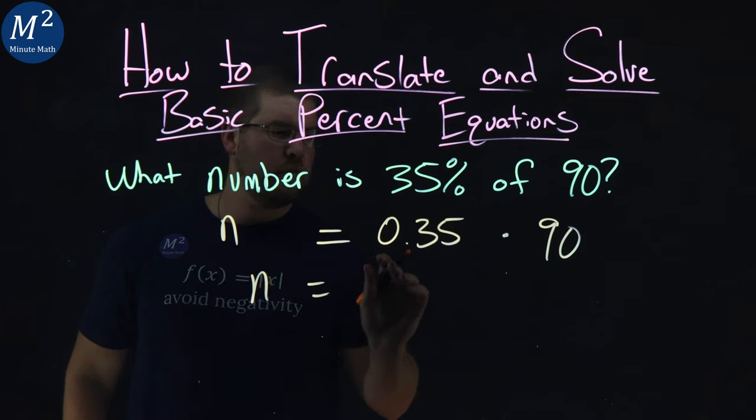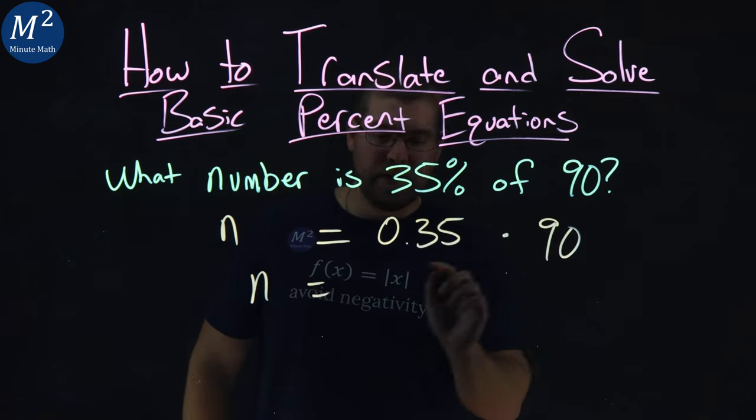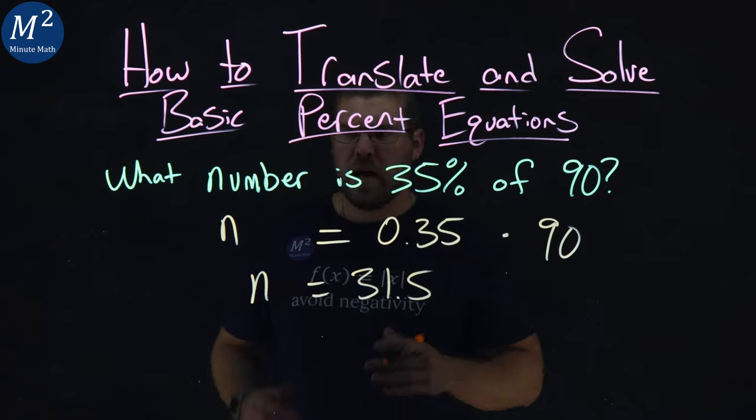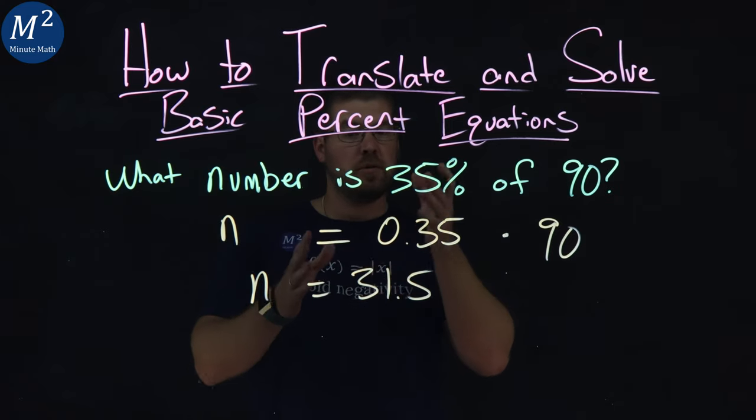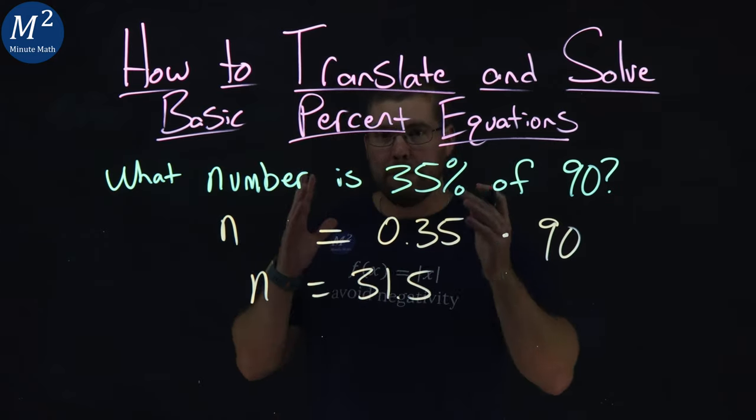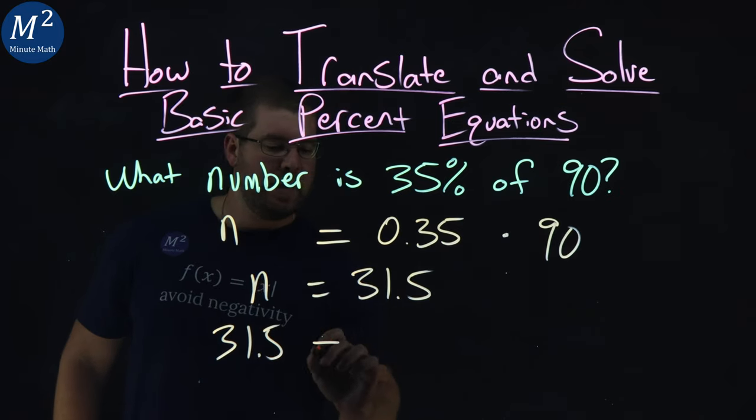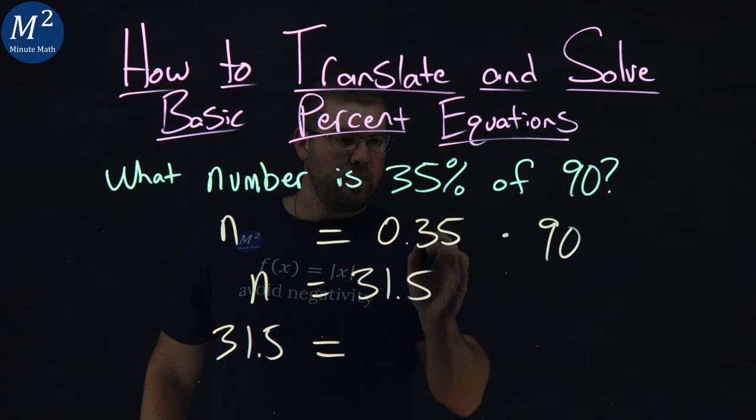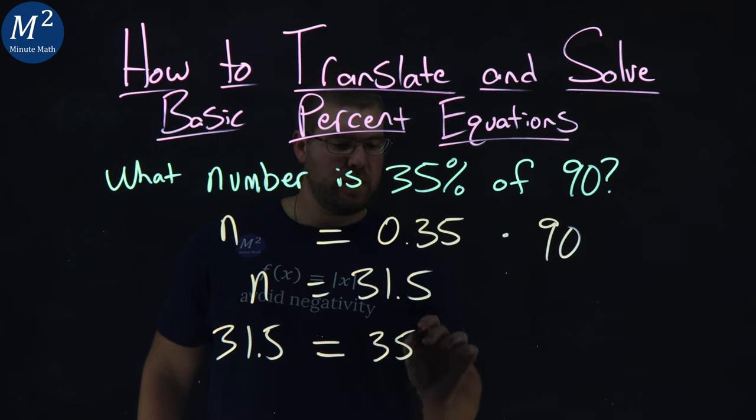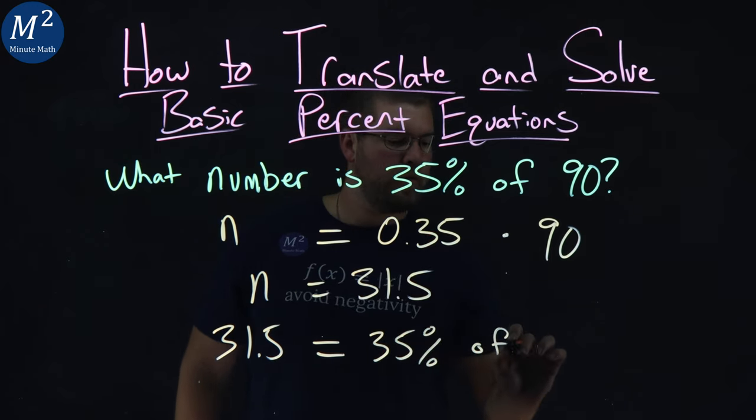n equals 0.35 times 90 is 31.5. And what does that tell us here? n is equal to 31.5, meaning 31.5 is 35% of 90.